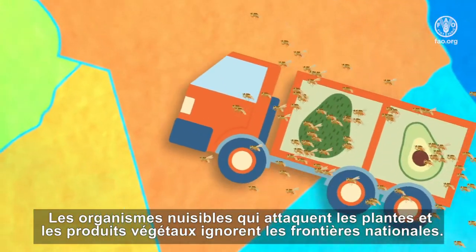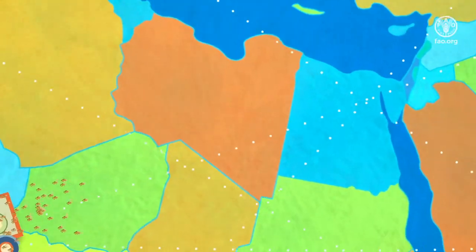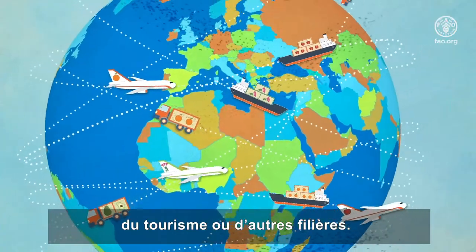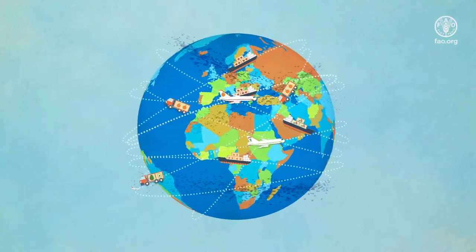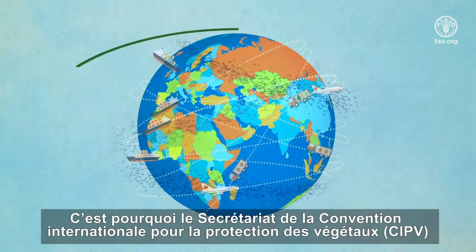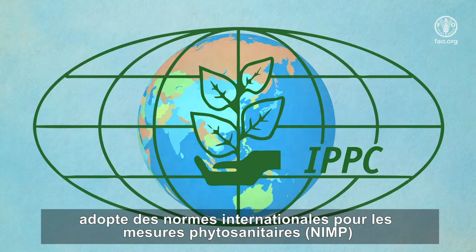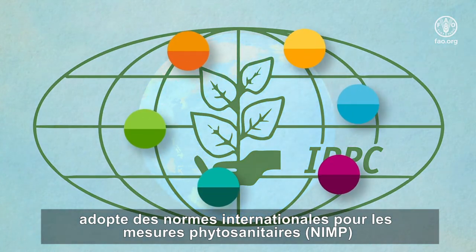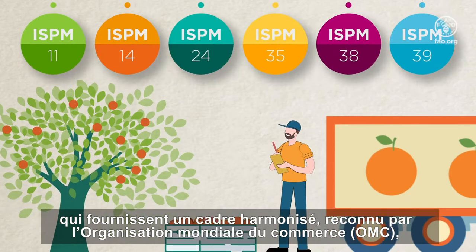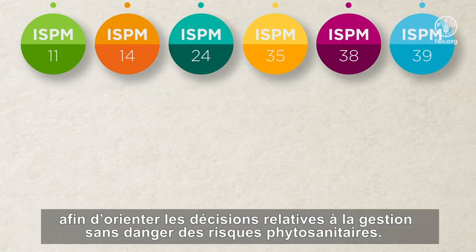National borders are meaningless to harmful pests that attack plants and plant products. They move stealthily across borders through trade, tourism and other pathways. That is why the International Plant Protection Convention adopts international standards for phytosanitary measures, ISPMs, which provide a harmonized framework recognized by the World Trade Organization to guide decisions around the safe management of pest risks.